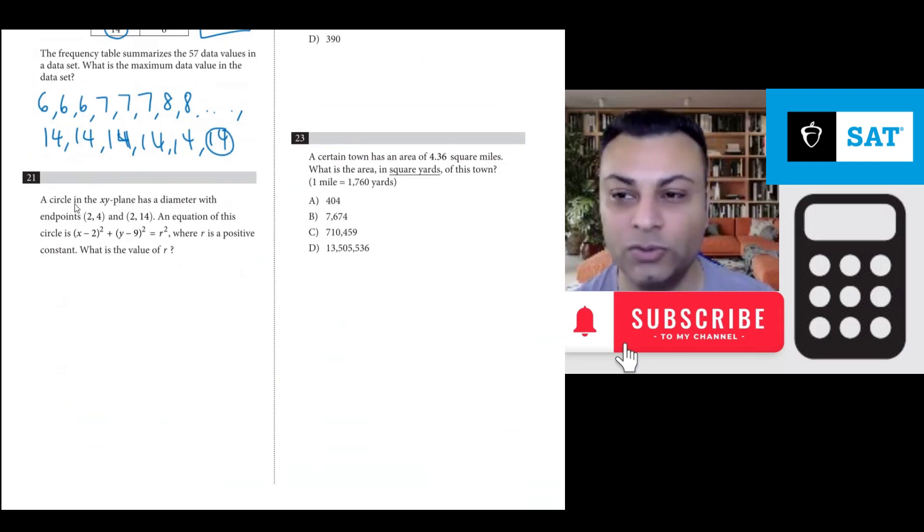Question 20. A circle in the xy-plane has a diameter with endpoints (2,4) and (2,14). An equation of this circle is (x-2)² + (y-9)² = r², where r is a positive constant. What is the value of r?